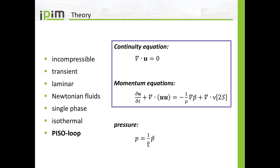So if we see later on the simulation value of P, or I say pressure, we have to know that we mean actually the pressure divided by the density. This is important. The continuity equation and the momentum equations are not solved consecutively or separately, but rather are combined into the so-called PISO loop.